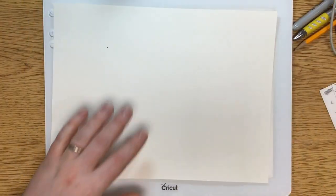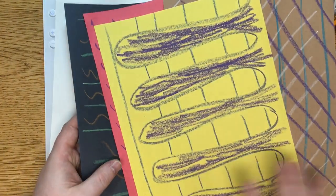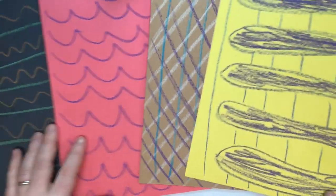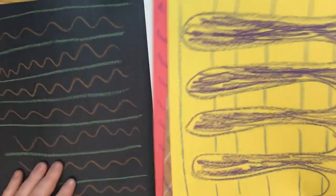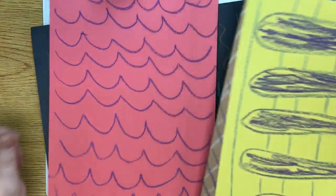So I've got a paper here that I'm going to be pasting all of my items onto, and the first thing I want to do is brainstorm, get some ideas. I'm looking at my different textures and thinking about what they could be.